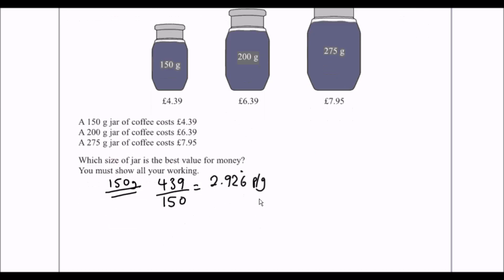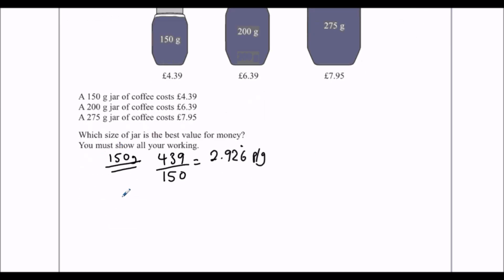Then we go to the next one, so we do the 200 grams. 200 gram jar, it's 639 pence for 200 grams. So we divide it again in the calculator, and that is 3.195 pence per gram.